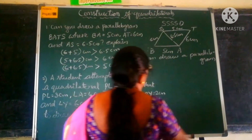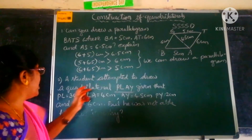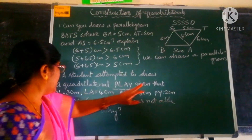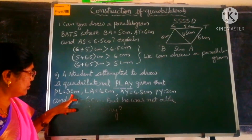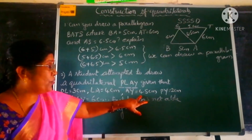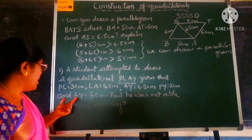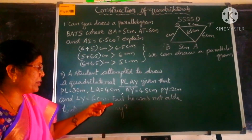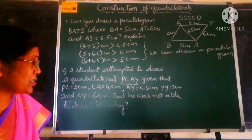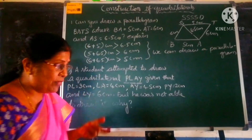Okay, children. Now let us check this problem. Yesterday, someone was attempting to draw a parallelogram PLAY. Given that PL is equal to 3 centimetres, LA is equal to 4 centimetres, AY is equal to 4.5 centimetres, PY is equal to 2 centimetres, and LY is equal to 6 centimetres. But he was not able to draw it. Why? Let us see — can we draw this?